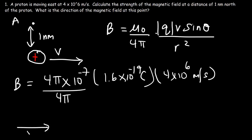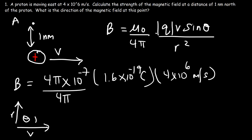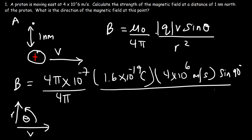Now the angle: v is in the positive x direction, and r goes from the source point — which is the positive charge — to the field point, which is where we wish to calculate the magnetic field. r goes from source to field, so r is basically this vector. Because they're both perpendicular to each other, the angle is 90 degrees. And r is 1 nanometer, which is 1 times 10 to the negative 9 meters. Let's square that.